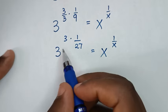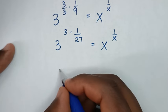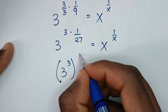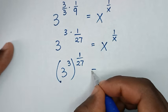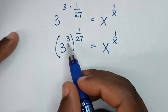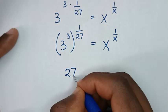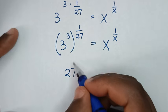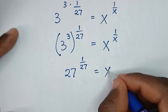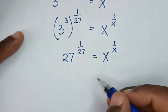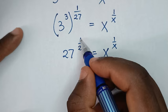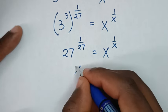Then in the next step, 3 power of 3, we place inside the bracket. So it will be 3 power of 3 inside the bracket, then this power of 1 over 27 outside the bracket, equal to x power of 1 over x. From here, 3 power of 3 is 27, so opening the bracket gives 27 power of 1 over 27, equal to x power of 1 over x. When we compare — same base, same power — x is equal to 27 and 1 over x equals 1 over 27. So x is 27. This is our final answer.